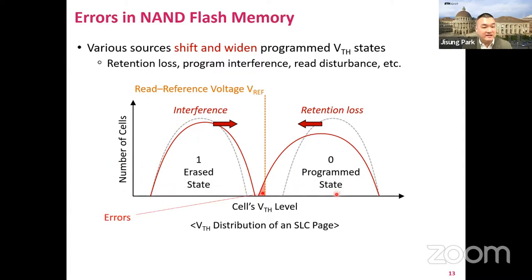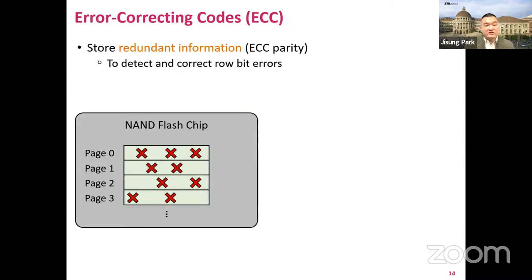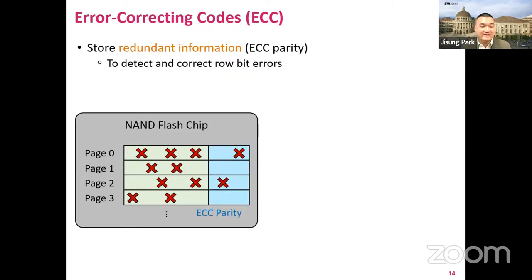If threshold voltage states shift beyond the reference voltage level — see the red area — reading the page incurs errors as the cells in this area would read as 1, which should be 0 actually. To avoid such errors, it is common practice in modern SSDs to use error correcting codes, or ECC in short, which stores some redundant data called ECC parity along with the original data in order to use the redundant data for error correction. Typically the ECC engine exists in the flash controller outside of the chip.